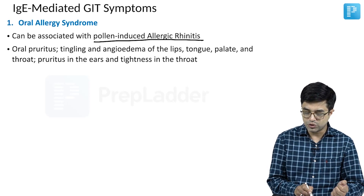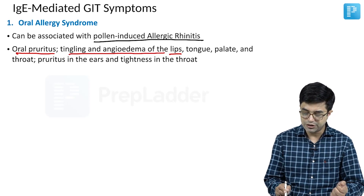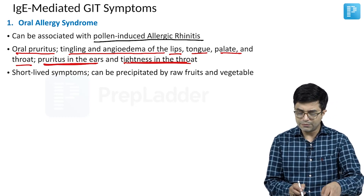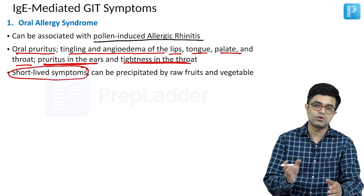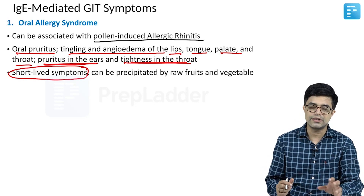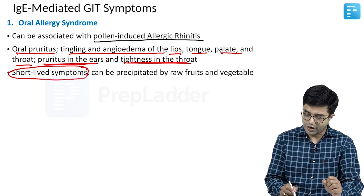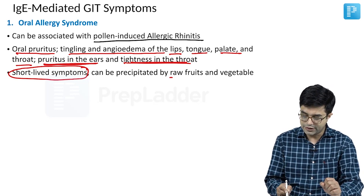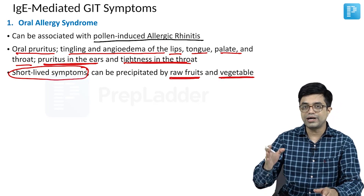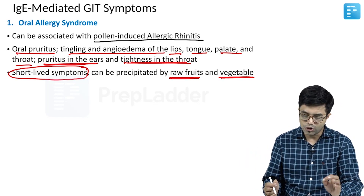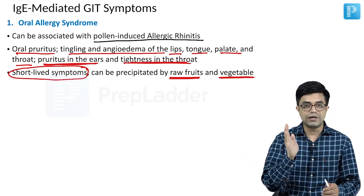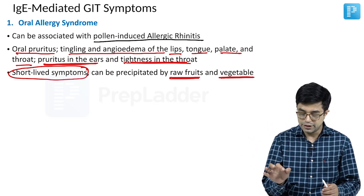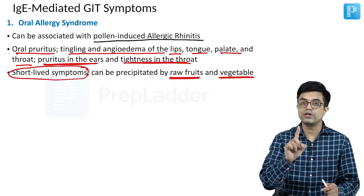Manifestations of oral allergy syndrome include oral pruritus, tingling and angioedema of the lips, tongue, palate and throat, pruritus in the ears, and tightness in the throat. The symptoms are usually short-lived, lasting about 20 to 120 minutes — that is about half an hour to two hours. In children, these symptoms are often precipitated by consuming raw fruits and vegetables. In adults and older individuals, oral allergy-like syndrome can also be produced by animal proteins, but in the vast majority of children, raw fruits and vegetables are more strongly associated.